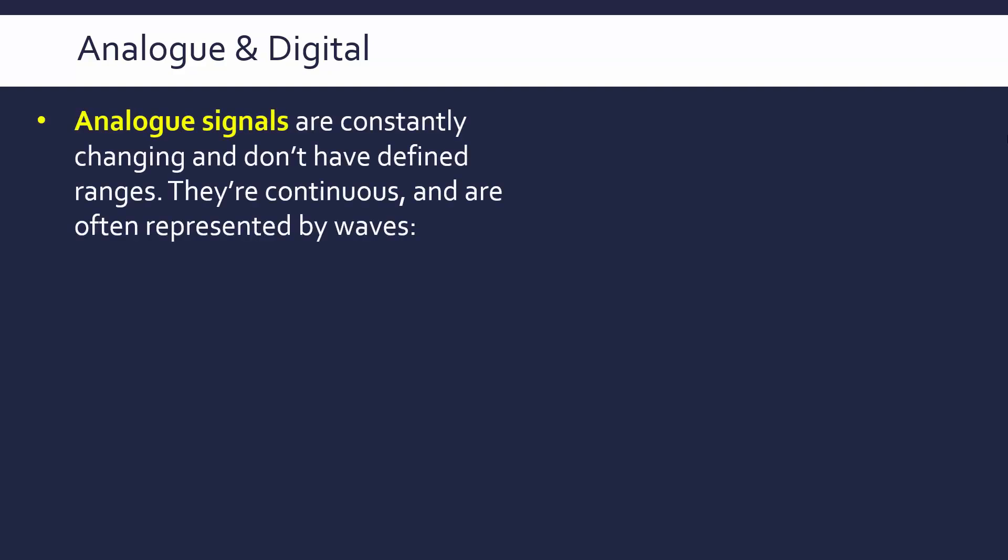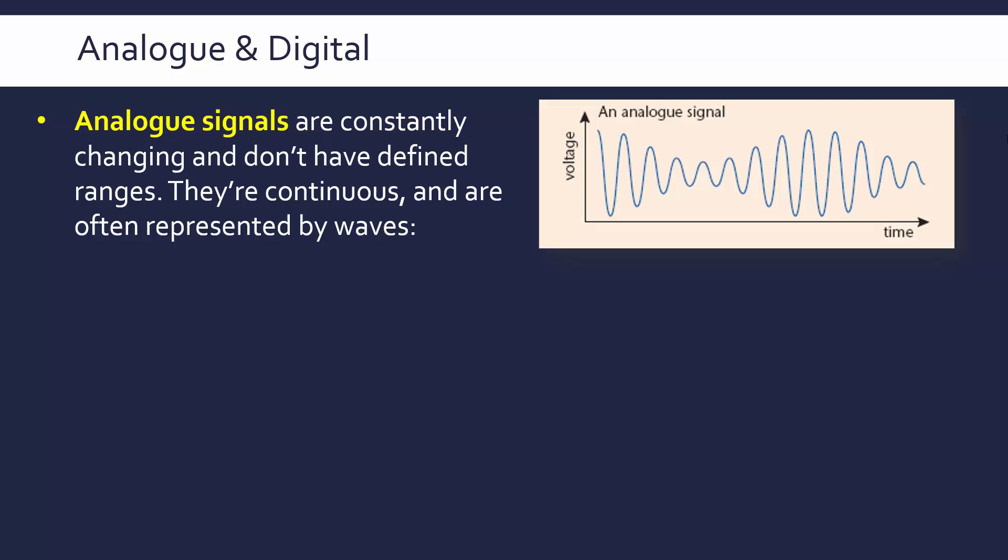First of all, an analog signal is a way of conveying information. These signals are constantly changing and don't have defined ranges. They're continuous and are often represented as waves. Here is a picture of an analog signal - it's usually represented as a wave because this continuous nature means we haven't got gaps, it's a nice smooth wave both on the y-axis and on the x-axis.